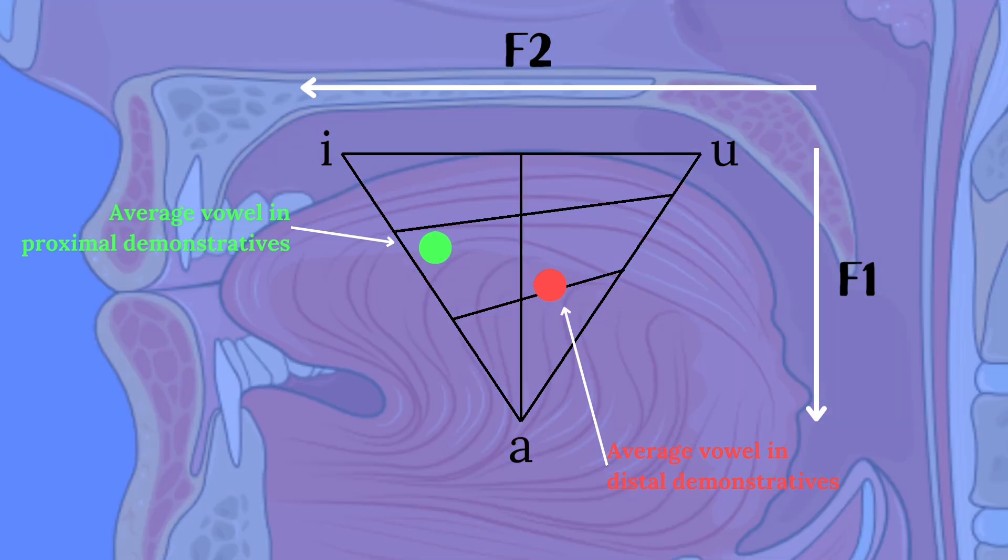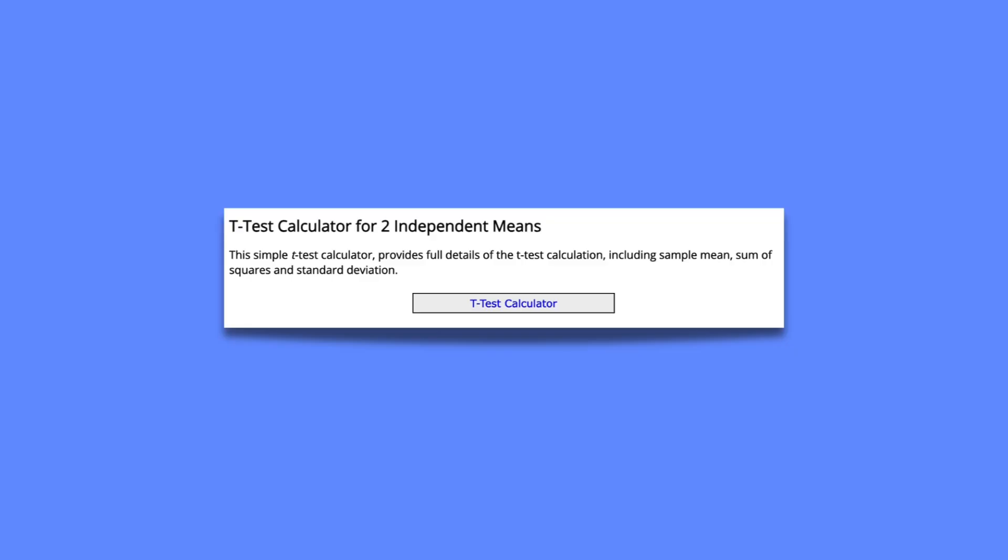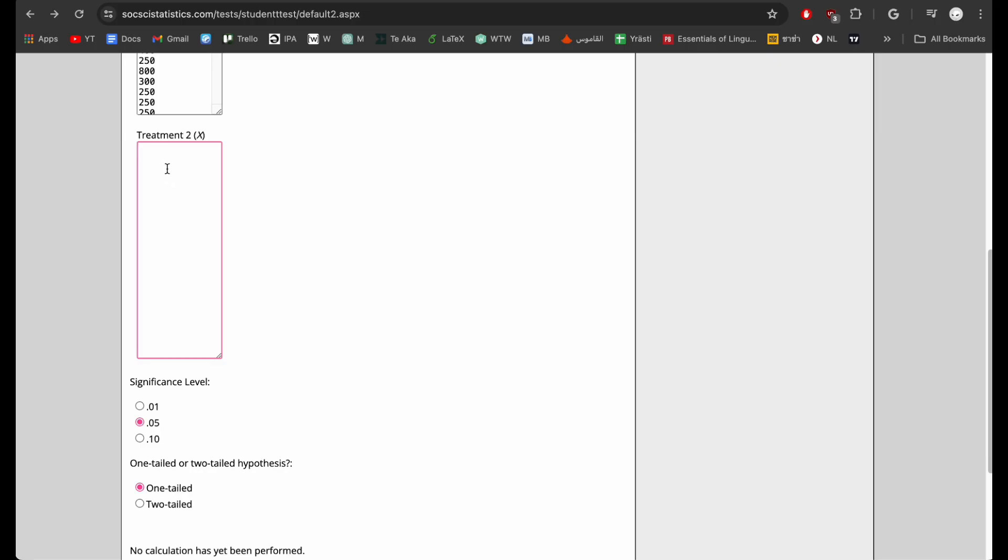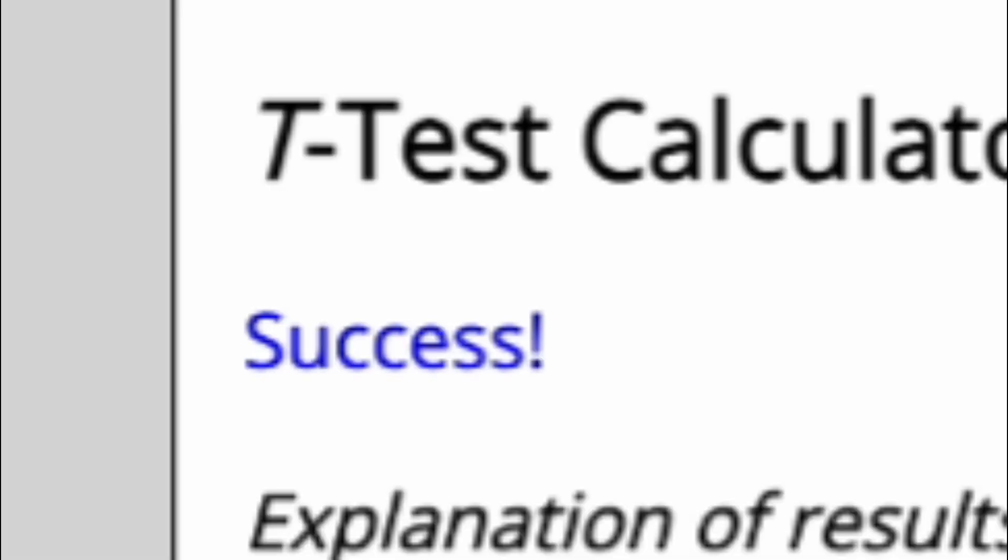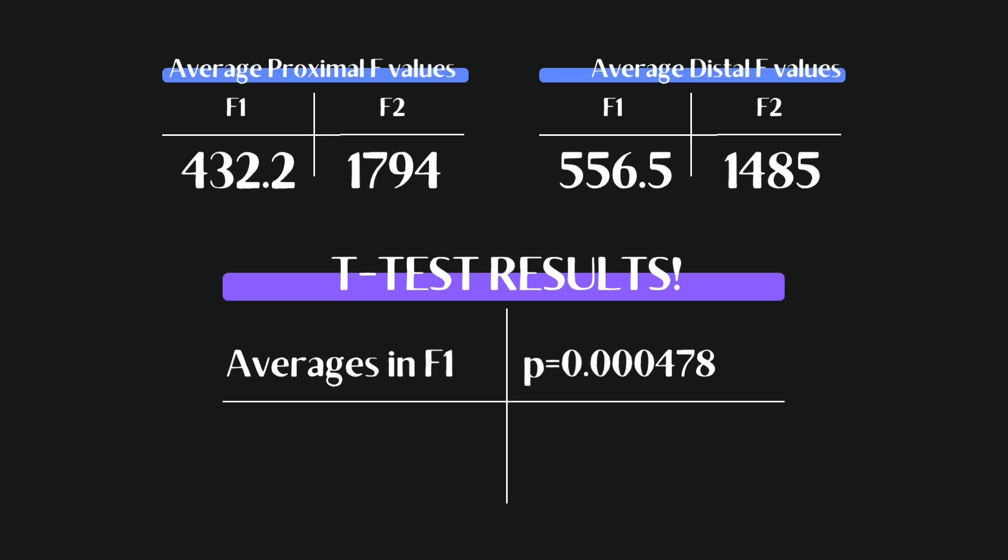To be sure, I ran some calculations, specifically a two-tailed t-test for two independent means on my data, which basically tests to see if there is a statistically significant difference between the averages of two samples. T-tests calculate something known as p-value, and if this number is below 0.05, we can consider the test significant. For the averages in f1, the p-value was 0.000478 and 0.00190 for f2, meaning that both tests were significant at p is smaller than 0.05, showing there is some kind of relationship between these vowels and the distance they show up in, at least in this dataset, hence the title, the vowels of distance.